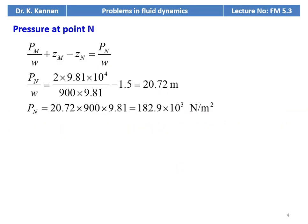Rearranging: PN by W equals PM by W plus ZM minus ZN. Substituting numerical values: 2 into 9.81 into 10 power 4, converting kilogram force to Newton by multiplying by 9.81 and centimeter square to meter square by multiplying by 10 power 4, divided by specific weight rho G equals 900 into 9.81, minus ZM minus ZN equals 1.5. This gives 20.72 meters. So PN equals 20.72 into 900 into 9.81 equals 182.9 into 10 power 3 Newton per meter square. The pressure at point N is 182.9 kPa.